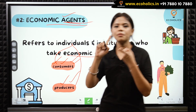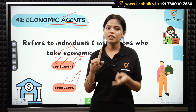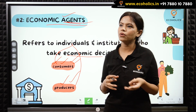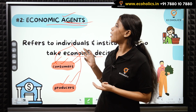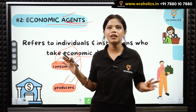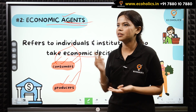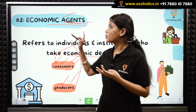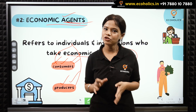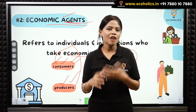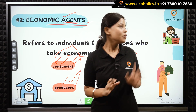So till now we learned about the meaning and definition of macroeconomics, how the term got its name, and then under important terms we learned about economic variables as the first topic and economic agents as the second. I'm very sure you all have understood what I am trying to convey, so let's move further.